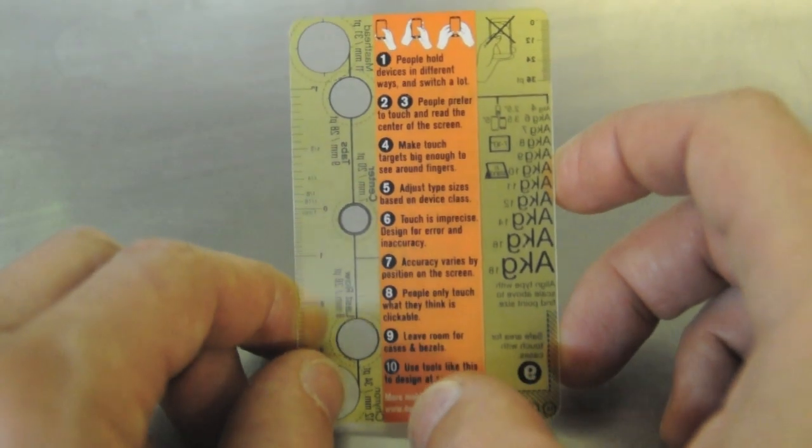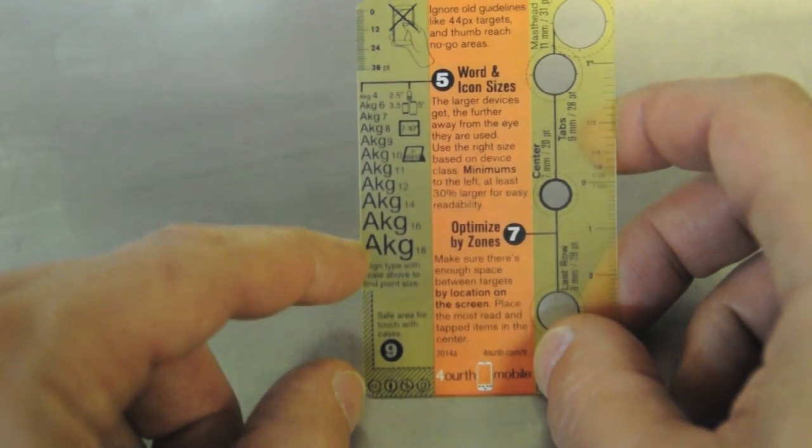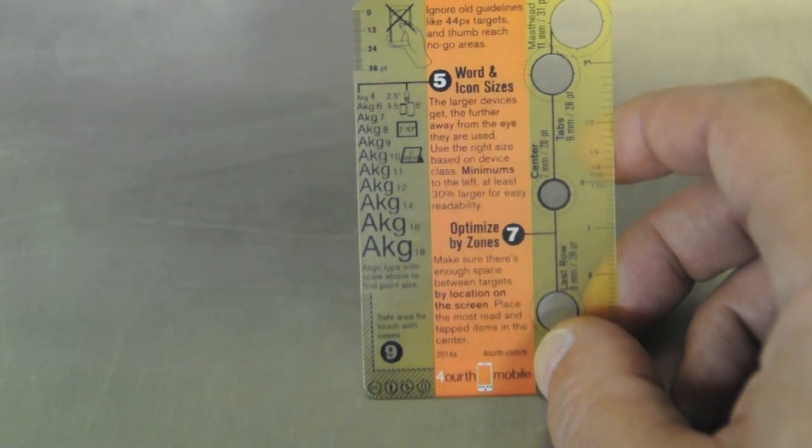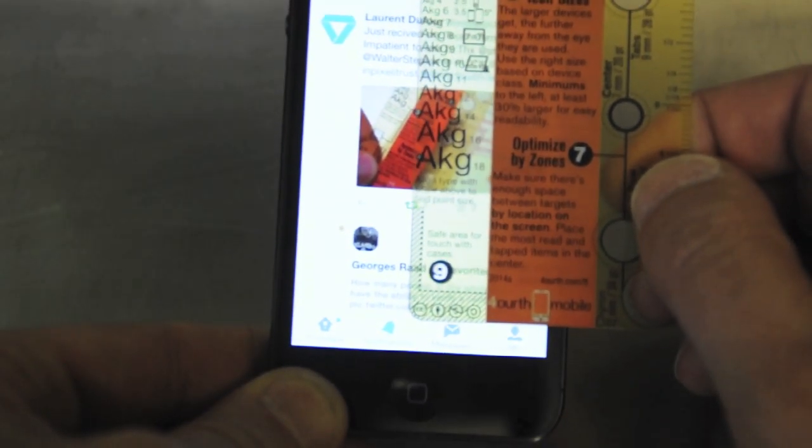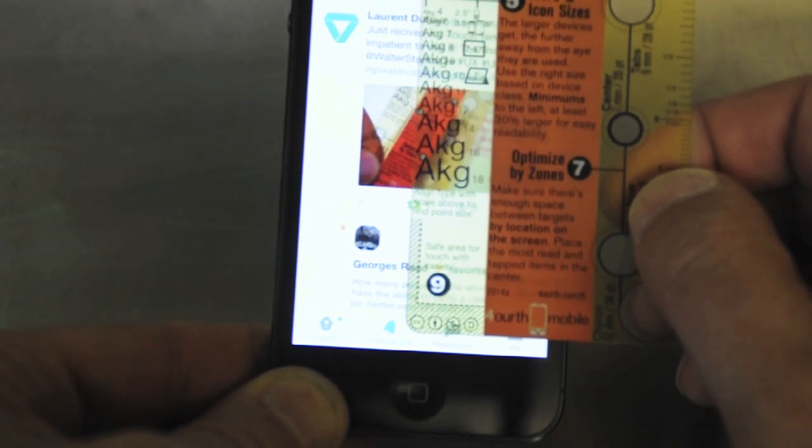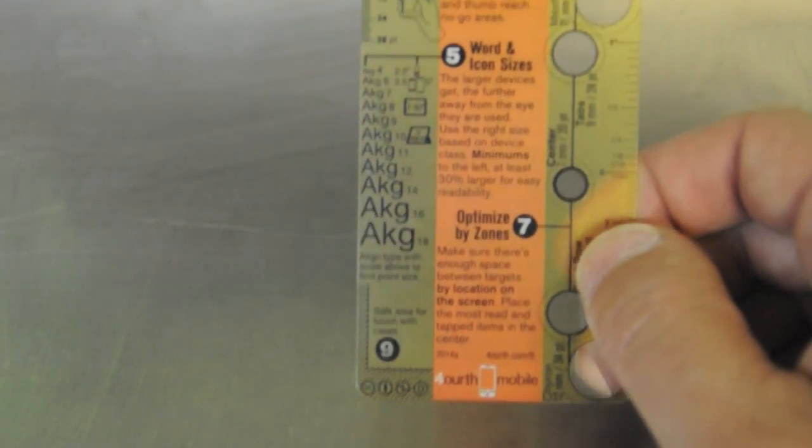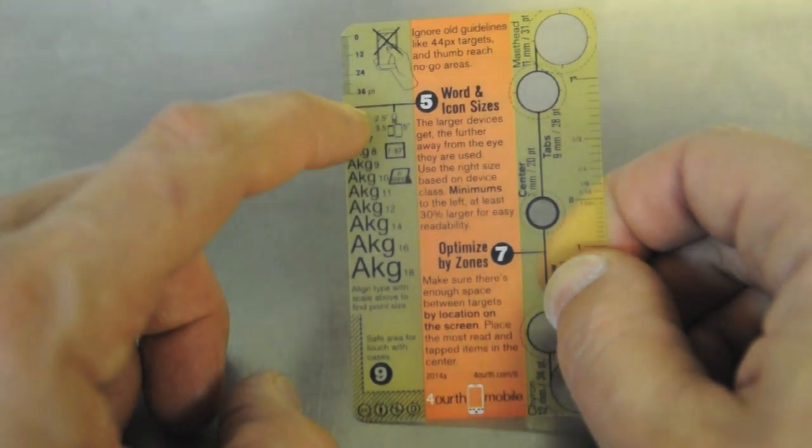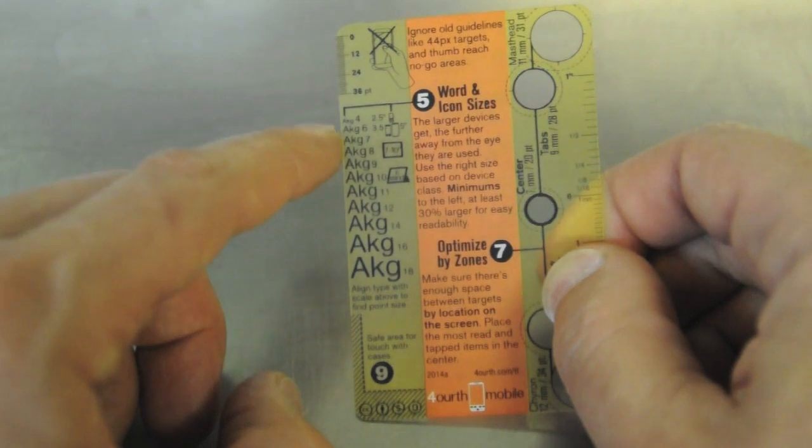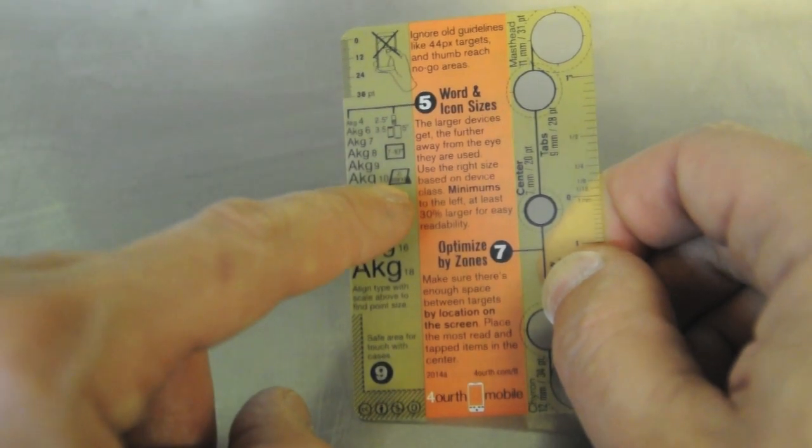That you adjust type sizes based on the device class. There's a little convenient type measuring tool over here. You line this up with the text you want to read. And then as long as it lines up perfectly, you measure it. And you know that this stuff is between about seven and eight points. But it also has these little diagrams here telling you that small phones can take two and a half point type, and big tablets can take up to ten point.